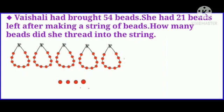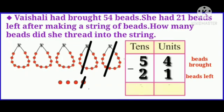Now, Vaishali had brought 54 beads. She had 21 beads left after making a string of beads. How many beads did she thread into the string? What is given? Vaishali brought 54 beads and had 21 beads left. What is asked? How many beads were threaded into the string? What must be done? Subtraction.